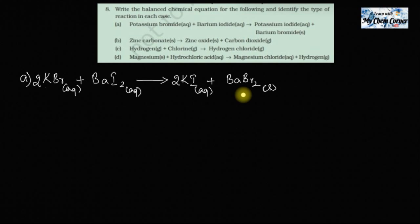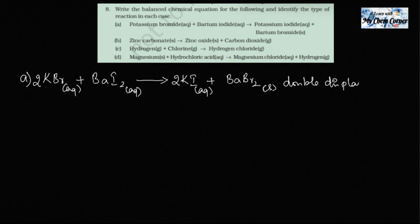Now what is happening here — the Br which was on potassium has moved to barium, and iodine which was on barium has moved to potassium. There is a displacement, but it's not just a single displacement — it's a double displacement because Br moved from K to Ba, and iodine moved from Ba to K. Two displacements have happened, therefore this is a double displacement reaction.